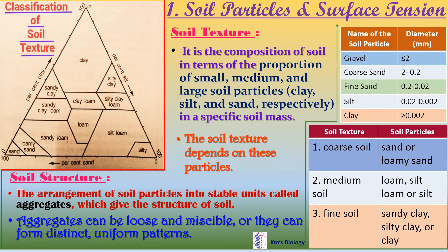Let us discuss about the first factor of the SPAC system, which is known as soil particles and surface tension. It is controlled by different parameters. Firstly, soil texture — it is the composition of soil in terms of the proportion of small, medium, and large soil particles, that means clay, silt, and sand respectively, in a specific soil mass.